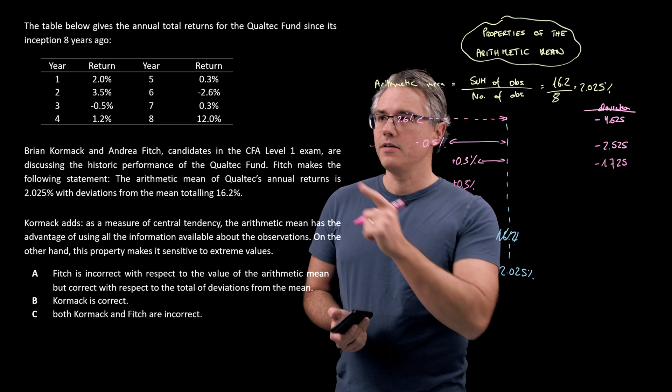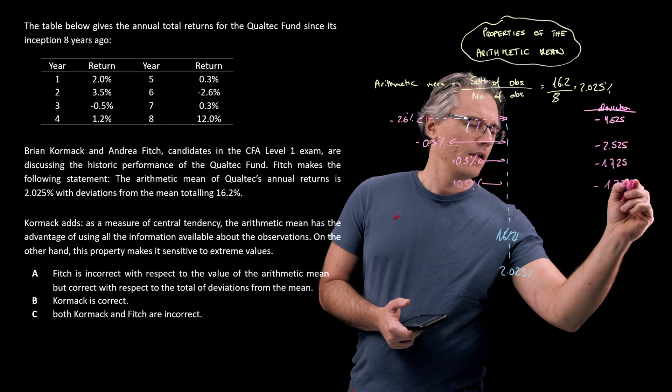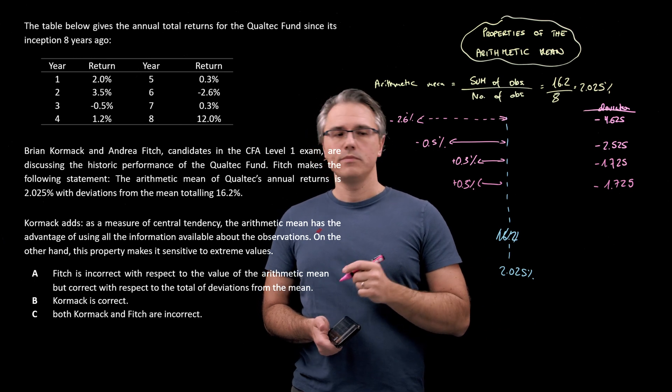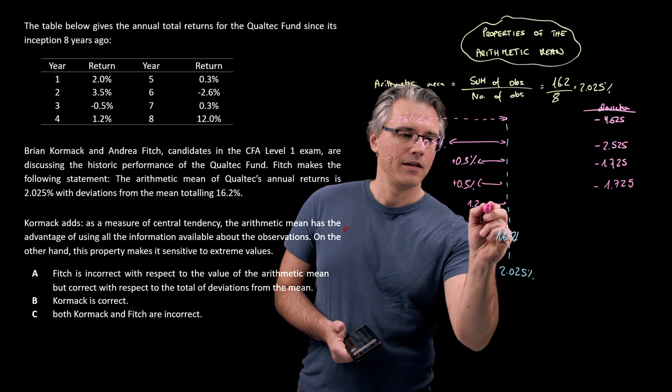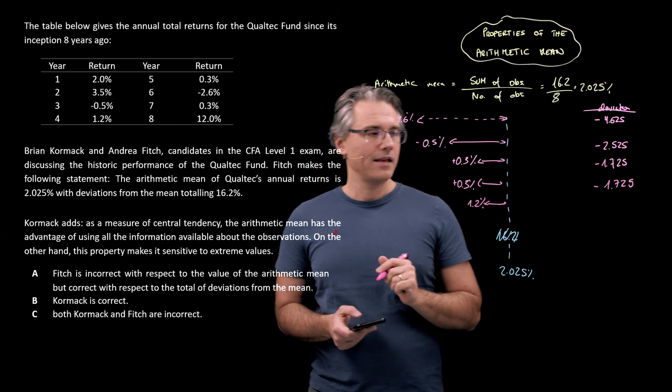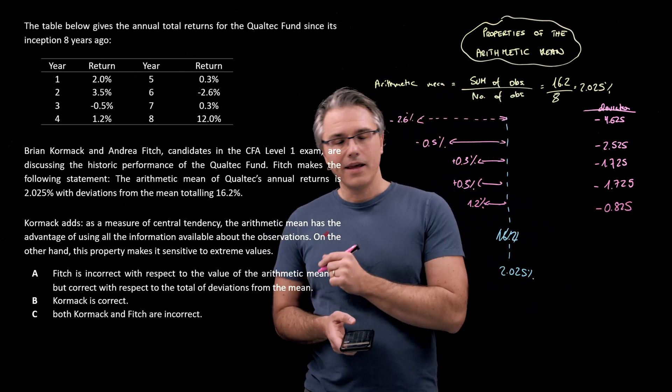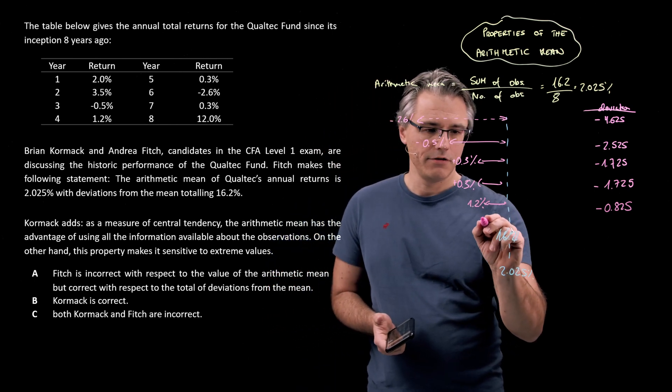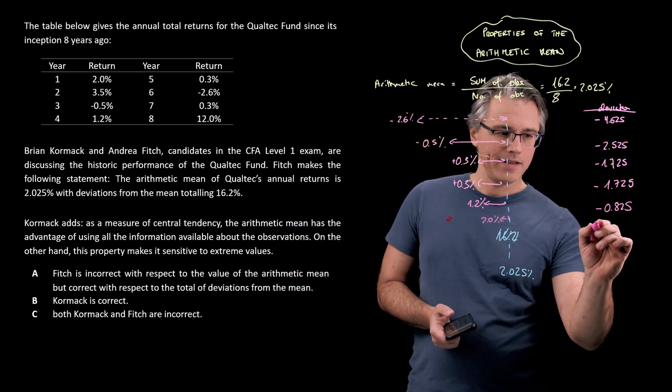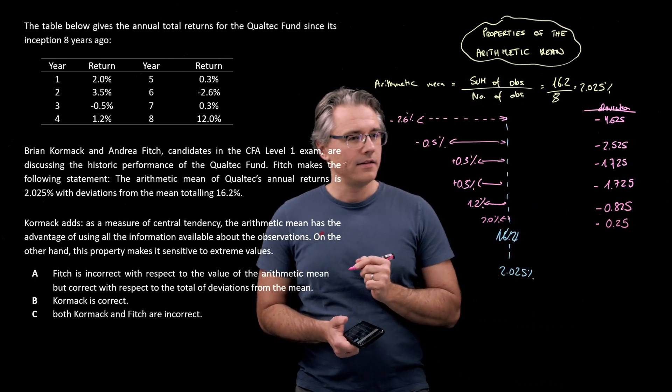However, 0.3 appears in our data set twice. So, basically, 2 times I've got the same observation and the same deviation from the mean. Now, the next one is 1.2, so we're getting closer. And for this one, it's 2.025 minus 1.2. That gives still a negative 0.825. The next one is 2%. Well, this is really, really close. Over here. And obviously, the distance, no need to calculate. This is still a negative, but it's literally just 0.025, isn't it?